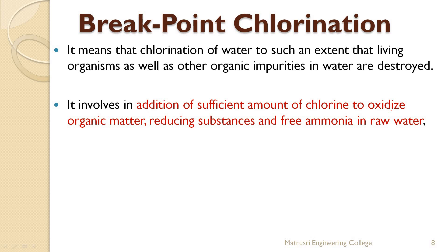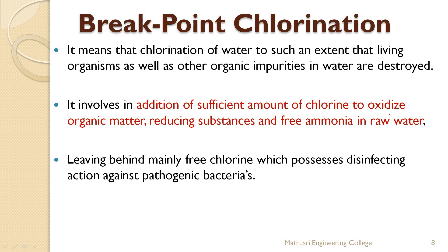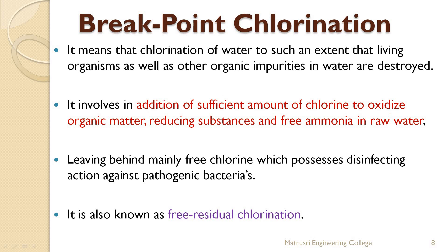Each dose oxidizes organic matter, reducing substances, and free ammonia in raw water. The first doses oxidize the organic matter; the next doses remove the reducing substances, turn by turn, as the dosage increases and these substances are destroyed. This leaves behind mainly free chlorine which possesses disinfecting action against pathogenic bacteria. Whatever excess dose is added to the water remains as free chlorine — also called residual chlorine or free residual chlorine — which shows disinfection action against pathogenic bacteria.